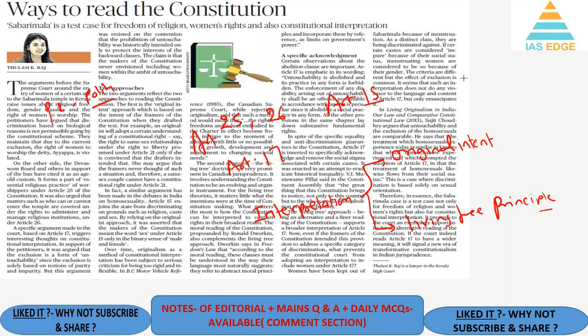The next article relates to Paper 2 Polity, specifically fundamental rights and interpretation of the Constitution. Women of certain ages are not allowed to enter Sabarimala temple in Kerala, raising issues about religious freedom, gender equality, and the right of women to worship. During a Supreme Court hearing, the petitioner argued that discrimination based on biological reasons is against the non-discriminatory nature of our Constitution.